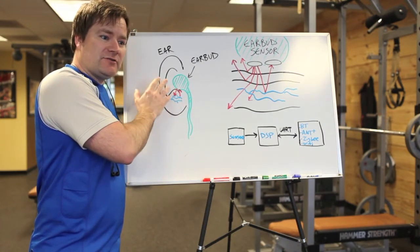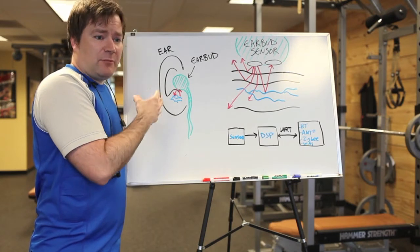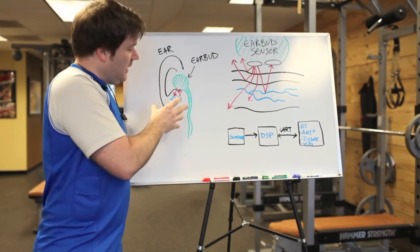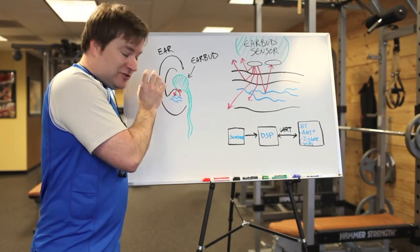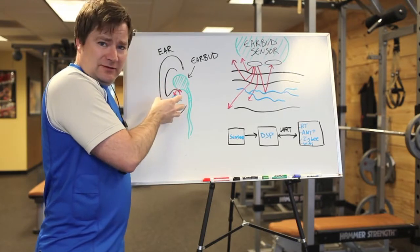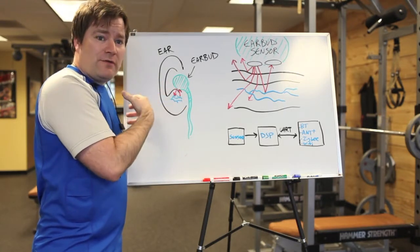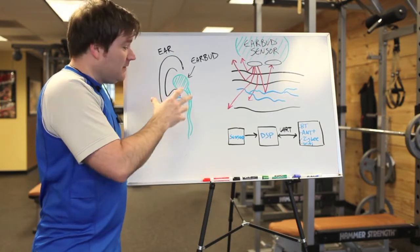You see, the ear has a unique vascular structure of capillaries, veins, and arteries. And we figured out how to collect that scattered light from that region and turn that into heart rate and other vital sign parameters.